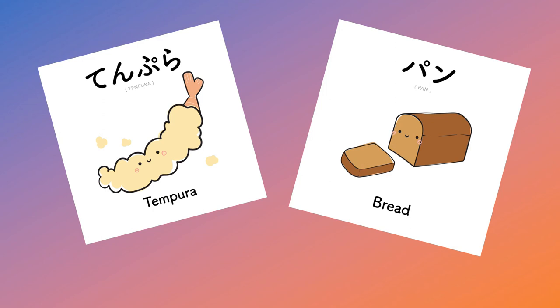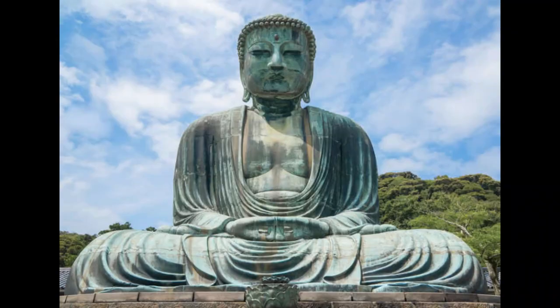We also got a few more loanwords from Sanskrit showing up in Middle Japanese texts, with naraku, which comes from the Sanskrit word naraka meaning hell, and butsu, which is Buddha.